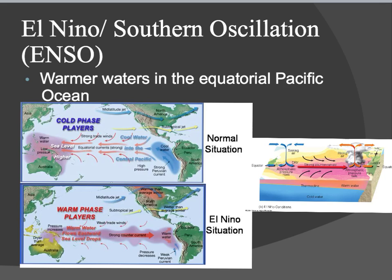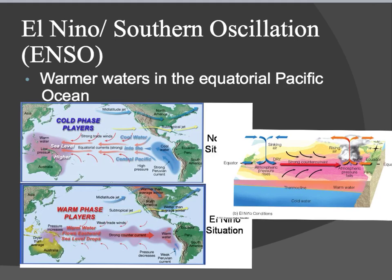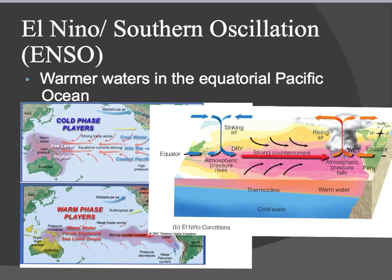During an El Niño year, our trade winds aren't as strong. So that warm water will come back over to the South America side and actually affect all the way up into North America as well. We get this warm water on our side, so we have air rising and cooling causing lots of rain — we get lots of rain, some flooding. Whereas over in Australia and Indonesia, we're going to get some drought conditions.